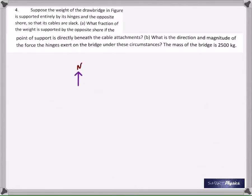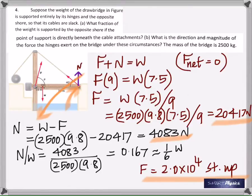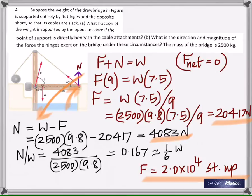The fourth problem: the weight of the drawbridge is given and it's supported entirely by its hinges, with the cables slack. You need to find what fraction of the weight is supported by the opposite shore, given that the point of support is directly beneath the cable attachments. The forces acting are the force at the hinges, the weight of the bridge, and the normal reaction at the shore — there is no cable force because the cables are slack.